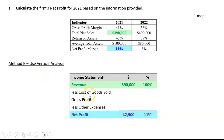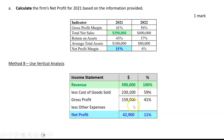This approach is useful because we can use it to answer other questions. If gross profit margin was 41%, that must mean 41% of $390,000, which is $159,900. If revenue was 100% and gross profit was 41%, then cost of goods sold was 59%. And if gross profit was 41% but we only finish with a net profit of 11%, the other expenses must have been 30%. These figures will come in handy for later questions.